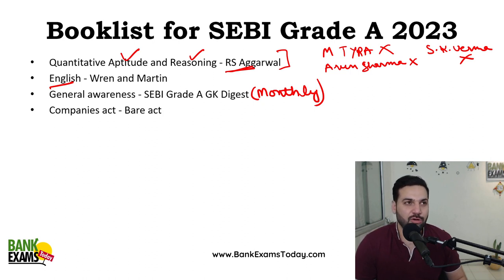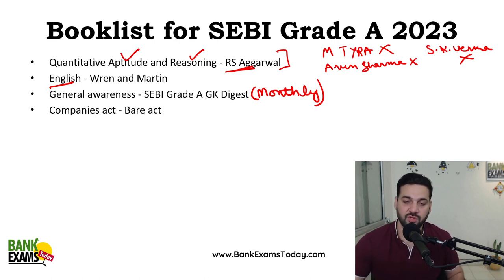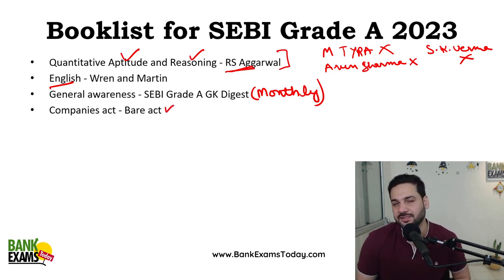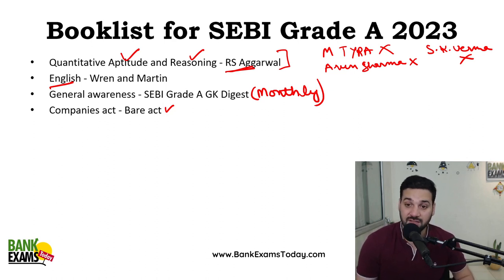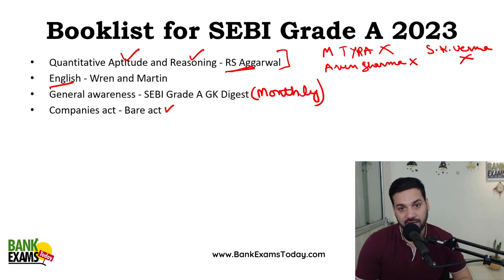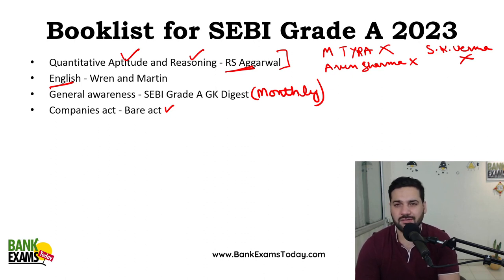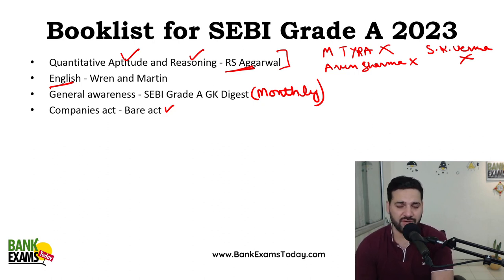The Companies Act — a lot of books are available in the market, but personally I do not recommend them. They are really complicated and a lot of analysis is given. You're not going to appear for a law exam, so I would highly recommend you to follow the Bare Act. The Bare Acts have been written in very easy language, easily understandable, and available online for free. Personally, I teach Companies Act and I go through Bare Acts. It's available on MCA's website — Ministry of Corporate Affairs — for free. So just read there or follow our notes.